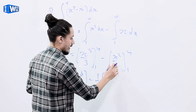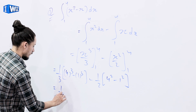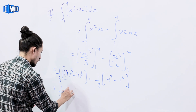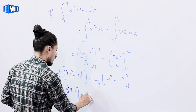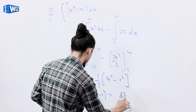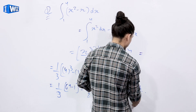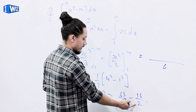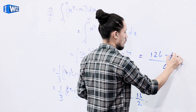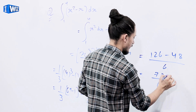Continuing: minus 1/2 times (4 squared minus 1 squared), which equals 1/3 times (64 minus 1) minus 1/2 times (16 minus 1), which equals 63/3 minus 15/2. Taking LCM of 6: (63 times 2) minus (15 times 3) all over 6, that is 126 minus 45 equals 81... giving us 78/6, and hence the result.